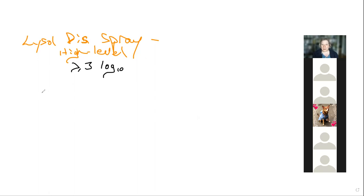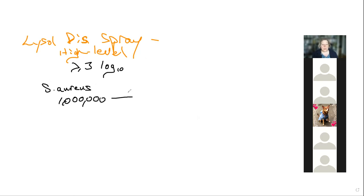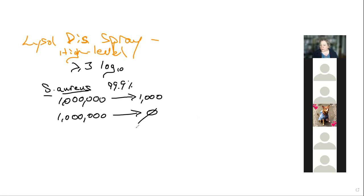Testing with Staphylococcus aureus: since we're talking disinfection, not sterilization, we don't use endospores. We put in a million organisms. To be cleared by the EPA as a disinfectant, I need to go from a million down to 1,000 — a 99.9% kill, which is a three-log reduction. With Lysol disinfectant spray we'd put in a million organisms and get nothing out, making it a high-level disinfectant for Staph aureus.